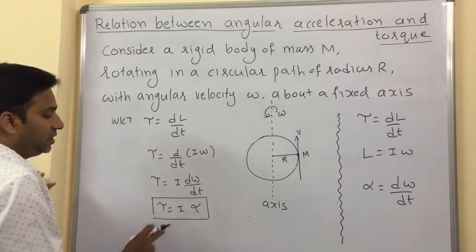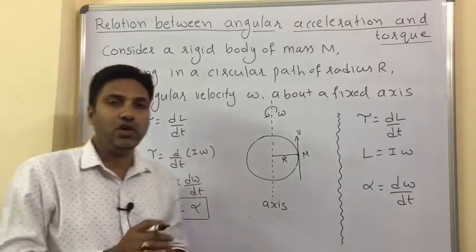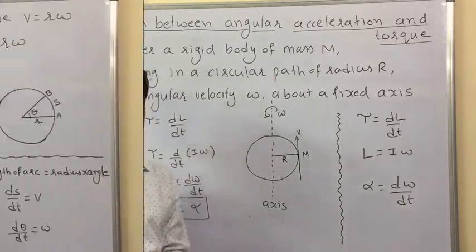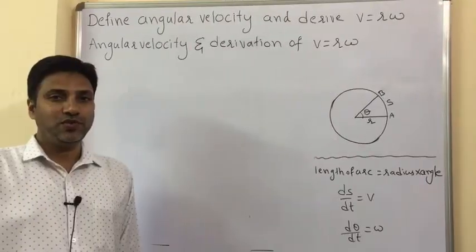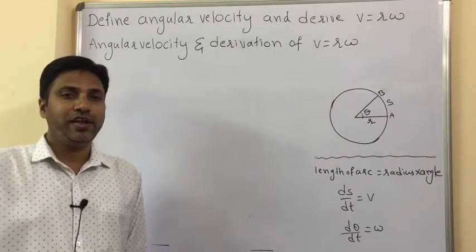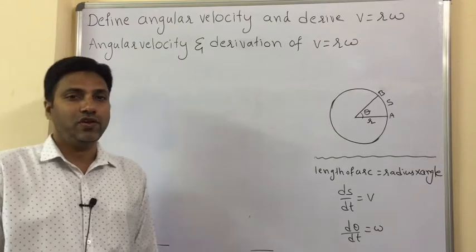Therefore, tau equals I-alpha is the relationship between torque and angular acceleration, where I is the moment of inertia of the object.